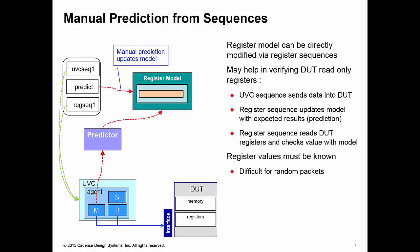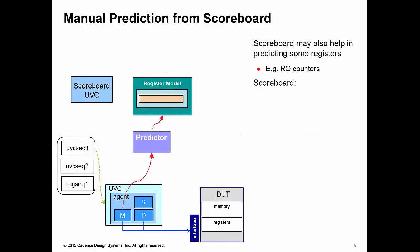Now, obviously, you need to know what the values in the register model are going to be before you can predict them. So this is going to be difficult if we're sending random data into our DUT. So an alternative solution may be to use the scoreboard to help us in manual prediction.